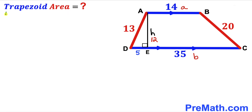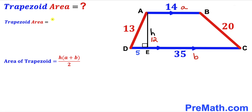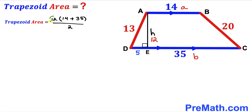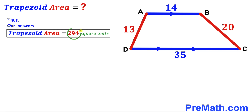Now for the final step: calculating the area of trapezoid ABCD. Using the formula Area = h × (a + b) / 2, with a = 14, b = 35, and h = 12: Area = 12 × (14 + 35) / 2 = 12 × 49 / 2 = 6 × 49 = 294 square units. So the area of trapezoid ABCD is 294 square units.